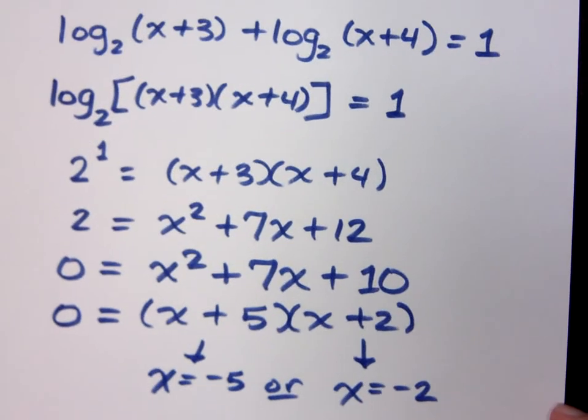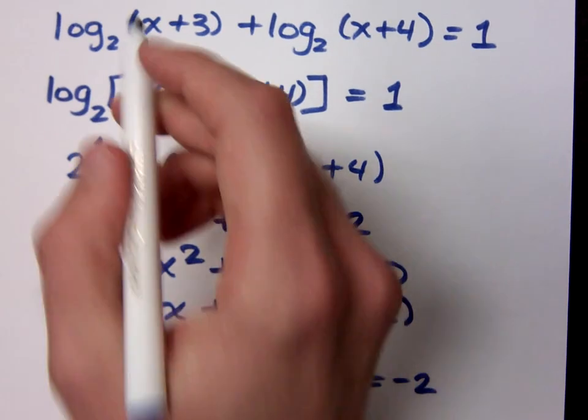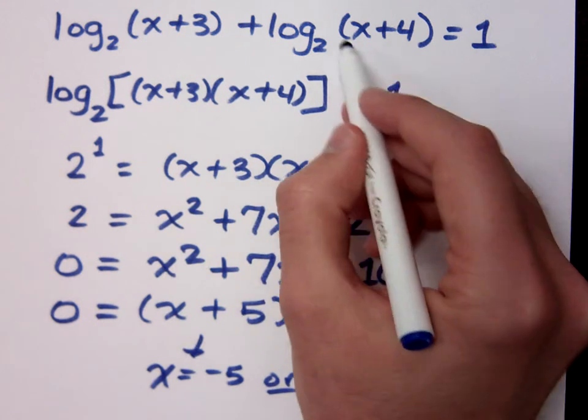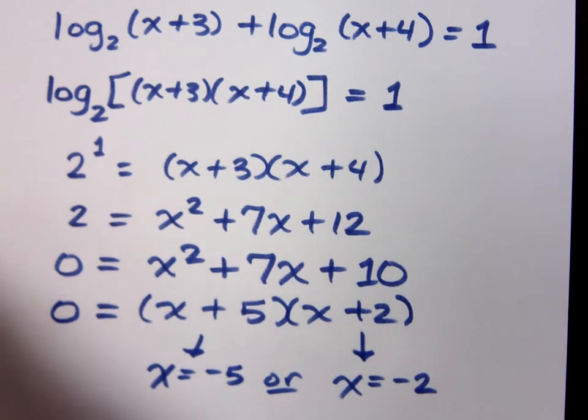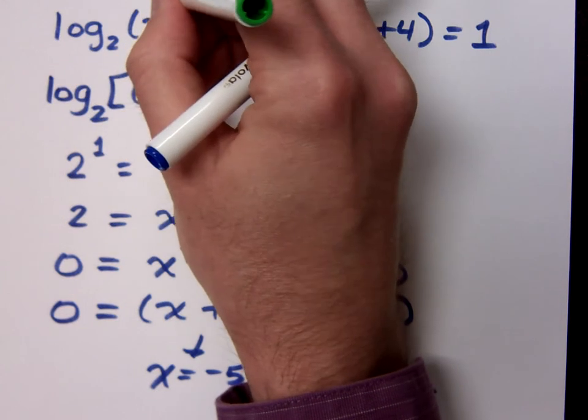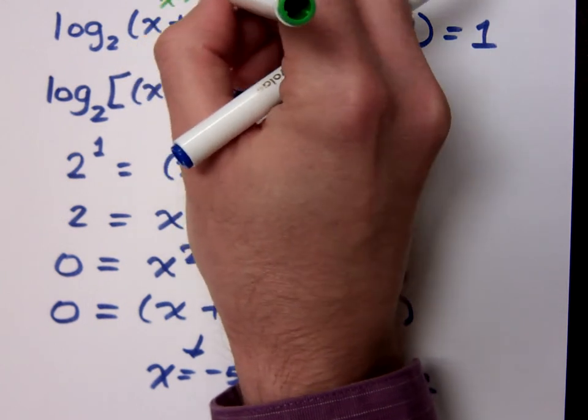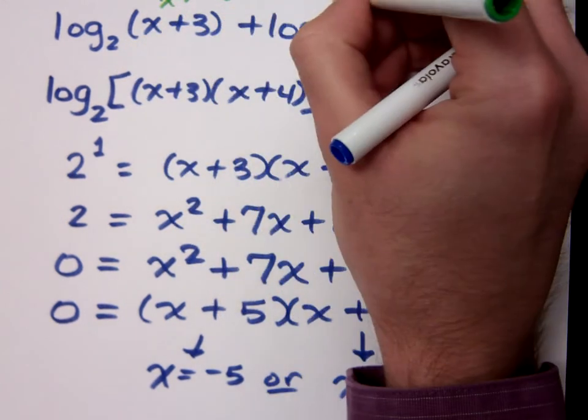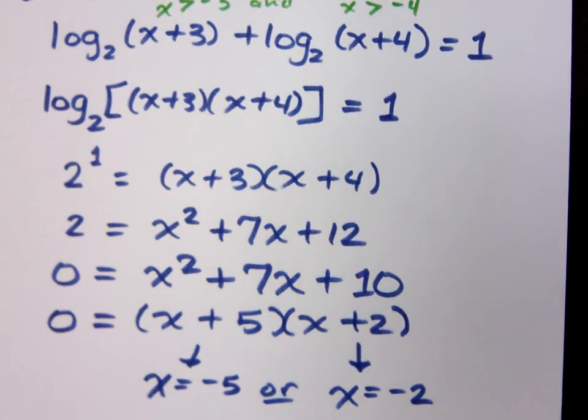Look at the definition that we have. Let's look at these expressions. x plus 3 has to stay positive. x plus 4 has to stay positive. So that means here, when I'm talking about my restrictions, x has to be greater than negative 3, and x has to be greater than negative 4.